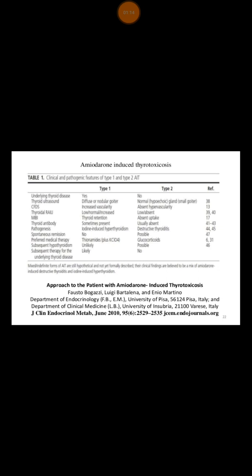It is very challenging to differentiate between Type 1 and Type 2, and the management is different as well. Type 1 usually has an underlying thyroid disease, whereas in Type 2 people usually have a normal thyroid. On thyroid ultrasound, you can't always differentiate between them, but in Type 1 you may find an underlying thyroid nodule or goiter, while in Type 2 the thyroid anatomy may be normal.